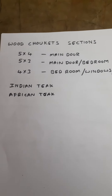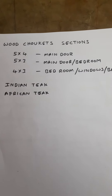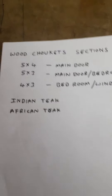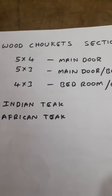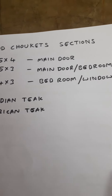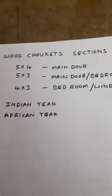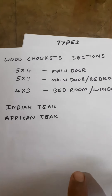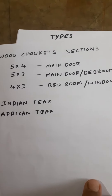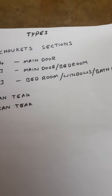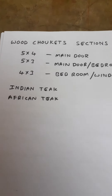The sections generally used in residential buildings are: five inch by four inch section for main doors, and five inch by three inch section for main doors as well as bedrooms. For bedrooms we will be using either five by three inch section or four by three inch section — four by three is generally popular for bedrooms. For bathrooms, nowadays people are using WPC frames.